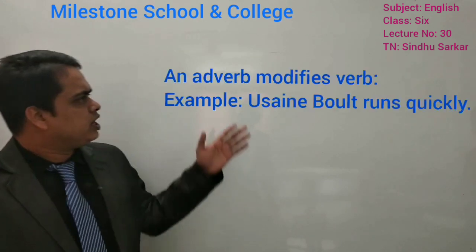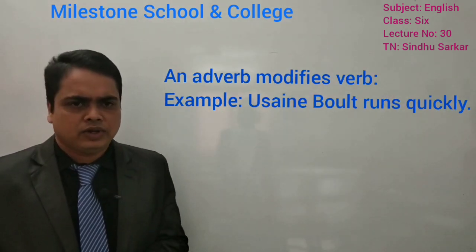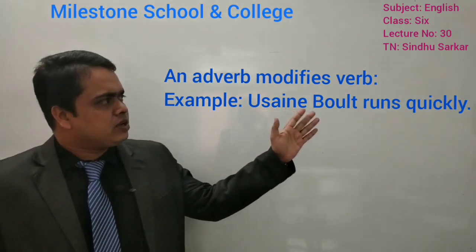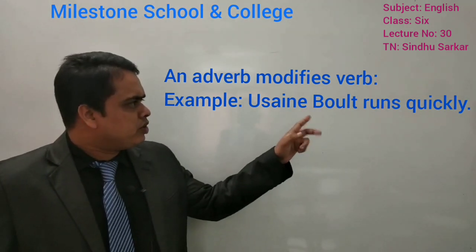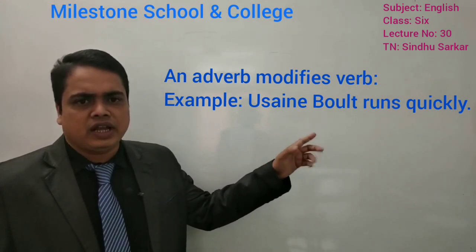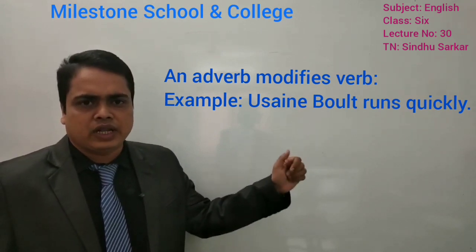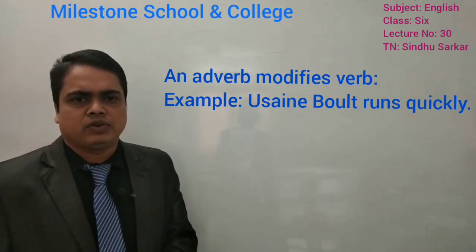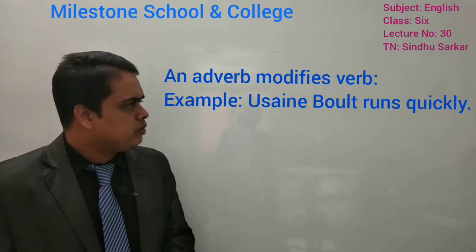At first, it modifies verb. For example: 'Usain Bolt runs quickly.' Here, 'quickly' is modifying the verb 'runs.' You will get the answer if you make a question with 'how,' and sometimes with 'when' — you will get the answer.